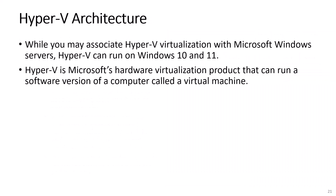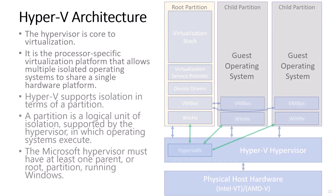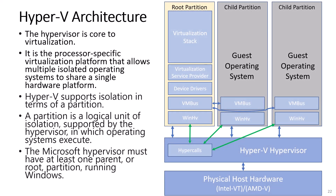While you may associate Hyper-V virtualization with Microsoft Windows servers, Hyper-V can run on Windows 10 and 11. Hyper-V is Microsoft's hardware virtualization product that can run a software version of a computer called a virtual machine. The Hypervisor is core to virtualization — it is the processor-specific virtualization platform that allows multiple isolated operating systems to share a single hardware platform. Hyper-V supports isolation in terms of a partition, which is a logical unit of isolation supported by the Hypervisor in which the operating system executes.